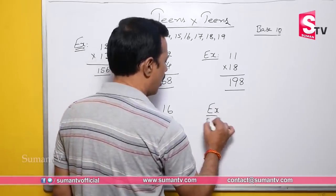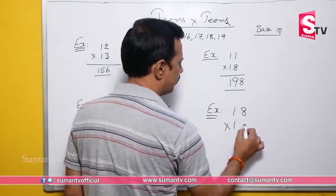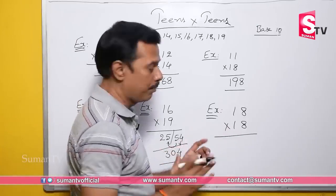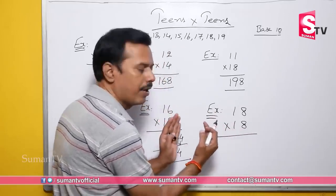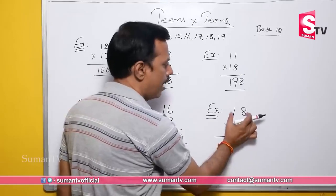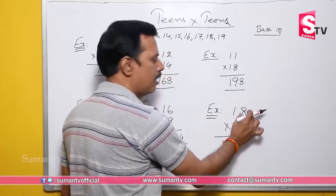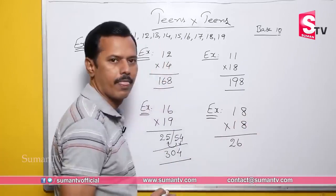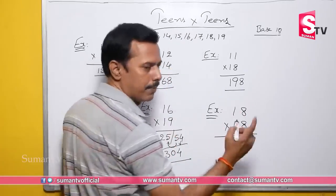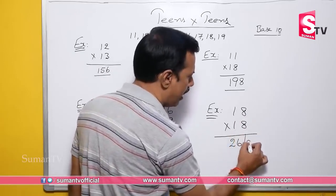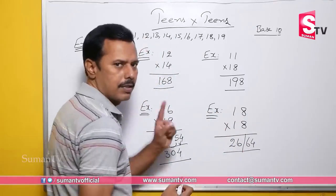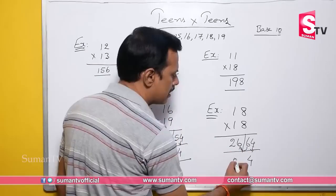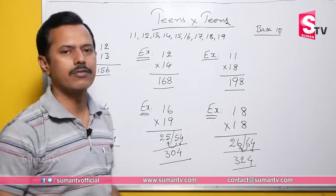Last example: 18 into 18. Left part: 18 plus 8 = 26. Right part unit space: 8 × 8 = 64 — two digits. Right part single digit is 4, carry forward 6. Add 6 to left part: 26 plus 6 = 32. So 18 into 18 is 324. We already know that 18 squared is 324 — confirmed!